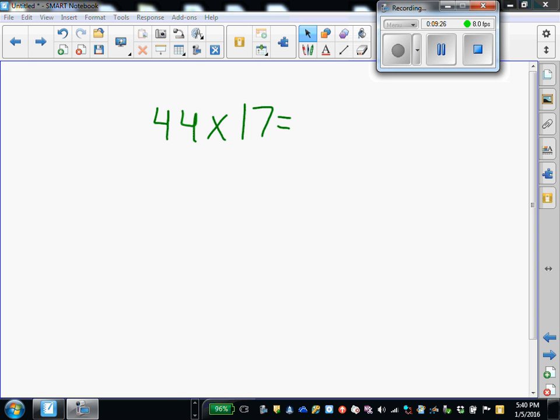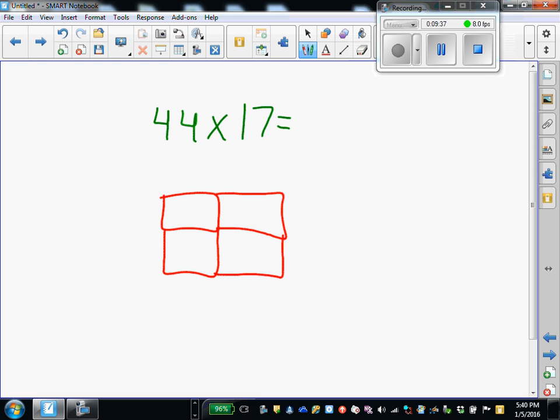And now we can check our answers. I'm working with 2 digits by 2 digits, so I'm going to make my 4 square. I'm going to choose 44 to go on top. 40 plus 4, 10 plus 7. Ready to multiply.